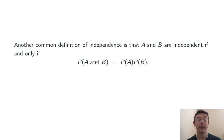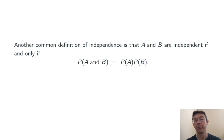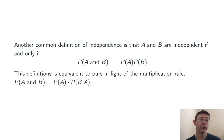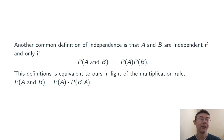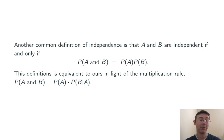Another common definition of independence is that A and B are independent if and only if the probability of them both occurring equals the product of the probabilities of each individually occurring. This definition is equivalent to the previous one, just because of the multiplication rule — P(A and B) = P(A) × P(B|A) — and our earlier definition of independence said P(B|A) should equal P(B).